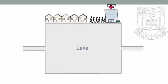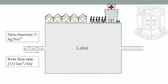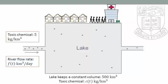In a town by a lake, some residents started showing signs of poisoning. After some investigation, they traced the problem to the lake, which they drew their drinking water from. The residents found that the river flowing into the lake carries 5 kilograms per cubic kilometer of the toxic chemical. Since the river flow rate varies with the season, they modeled it using a cosine curve: F(t) = 2 - cos(2πt/365), where t is in days.